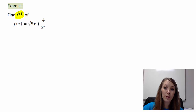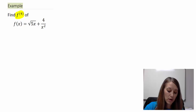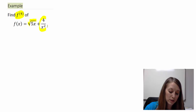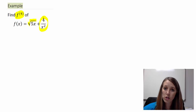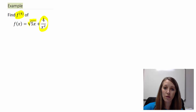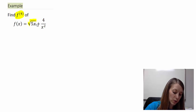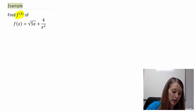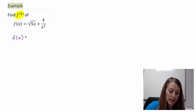The first thing that we need to do is rewrite this. We don't know how to take the derivative of the square root without rewriting it first. We can take the derivative using the quotient rule, but we can rewrite it into exponential format and that's going to be a little bit easier. Since I am just rewriting it, it is still just my original equation.